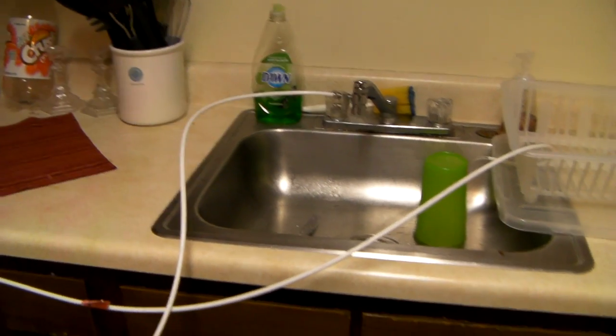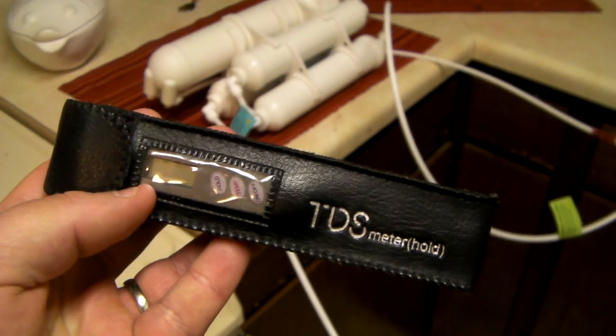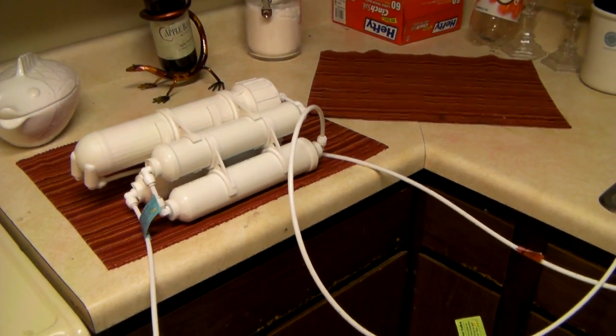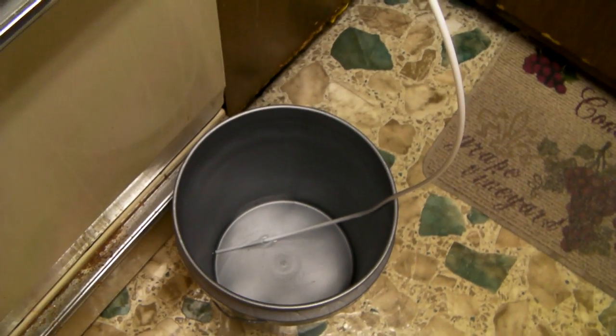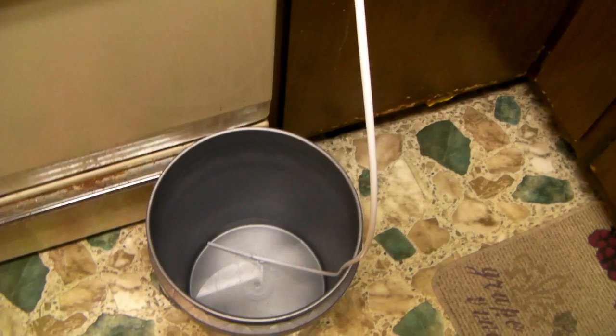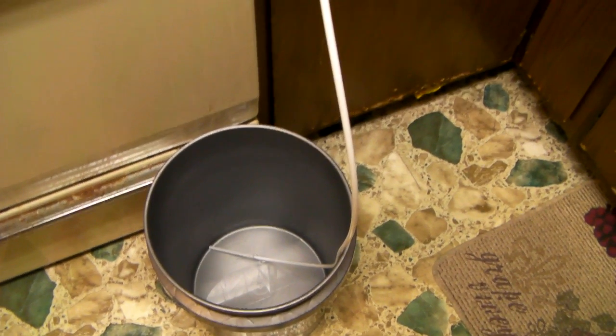If you use a TDS meter like this one, it will tell you the TDS of your tap water and then you can compare it to the water that this unit produces.